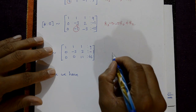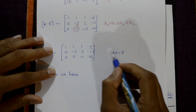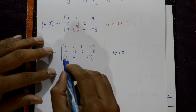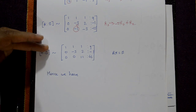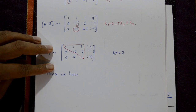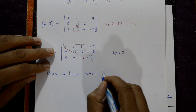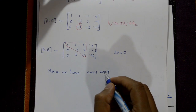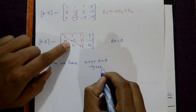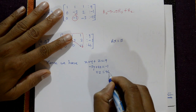This matrix is now in upper triangular form, so AX = B. Writing the equations: equation 1 is x plus y plus z equal to 9, equation 2 is minus 3y plus 2z equal to minus 1, and equation 3 is 11z equal to 44.